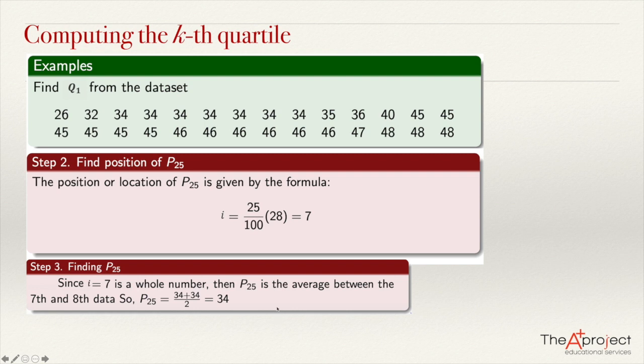This is the explanation of how to compute the quartile using this method. This is an approximation of the quartiles that may differ from other approximations used in other software, but it gives you a good estimation of percentile 25, percentile 75, and so on — a good approximation of the quartiles. That concludes my explanation of the quartiles. See you in another video.